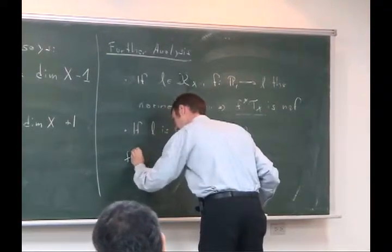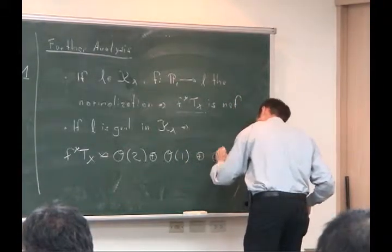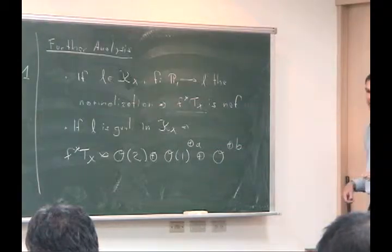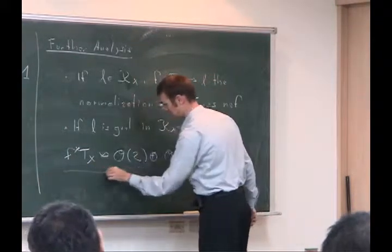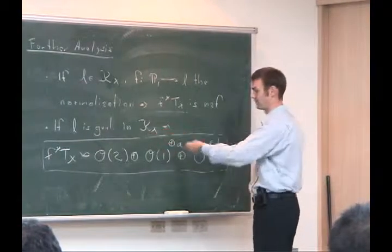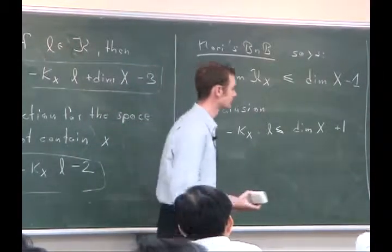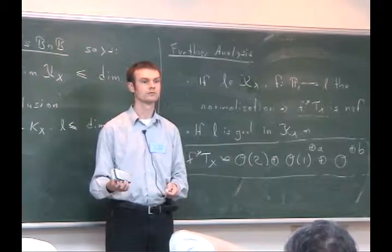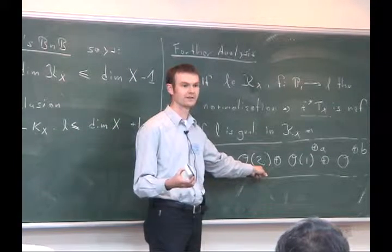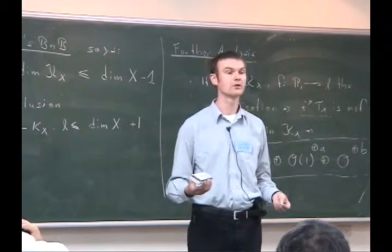Second, from further analysis: if L is a general member in KX passing through a general point, then we know not just that F*TX is NEF but its splitting type as well. The pullback of TX splits as O(2) ⊕ O(1)^a ⊕ O^b — some copies of O(1) and some copies of O. These curves are called, in the language of the field, standard rational curves, because their splitting type is what's typical for most curves.